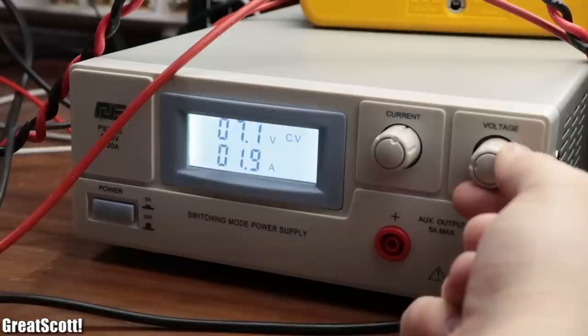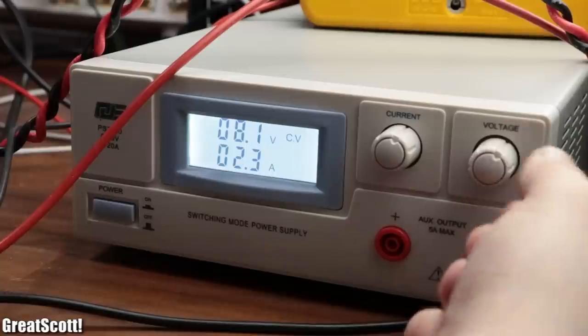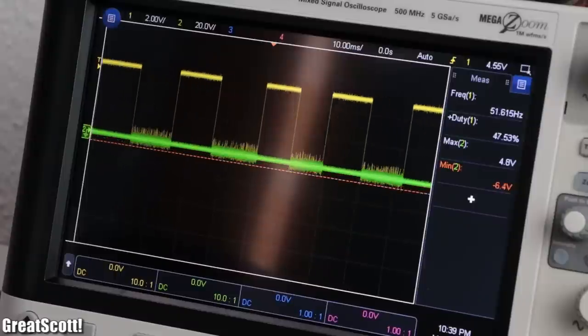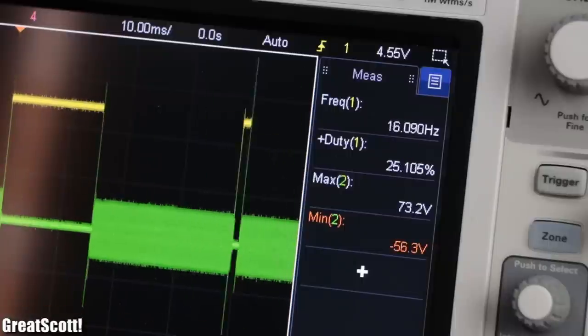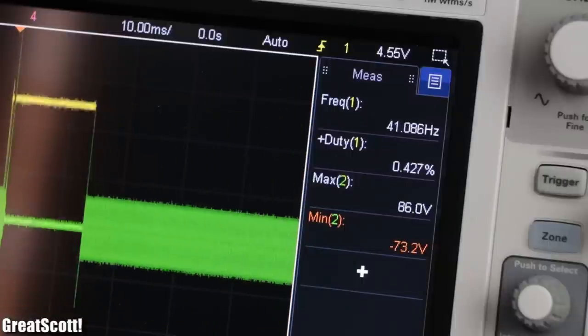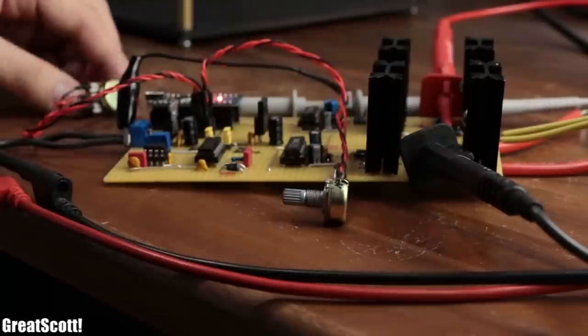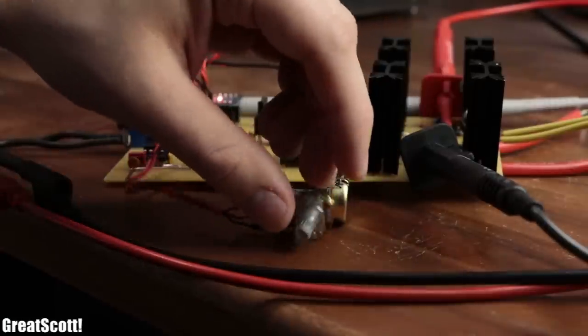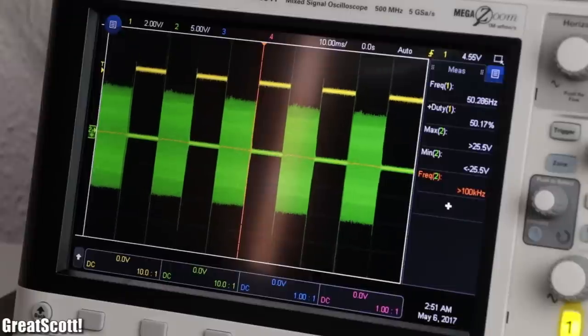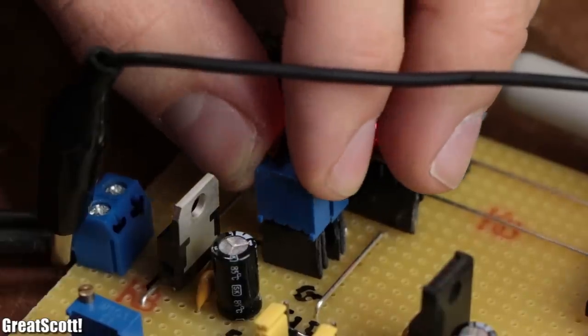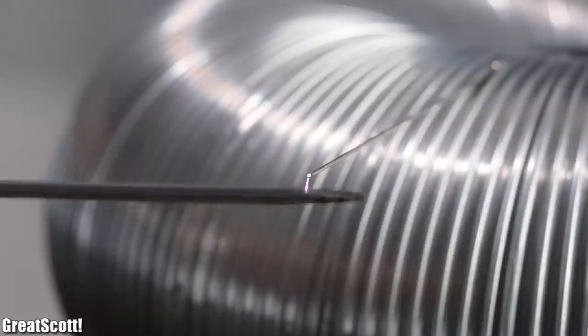The only problem was that the PWM signal got pretty unstable while the input voltage of the Tesla coil raised. But by increasing the distance between the Tesla coil and the potentiometer, this problem decreased and was barely noticeable after I replaced the potentiometers with trimmers.